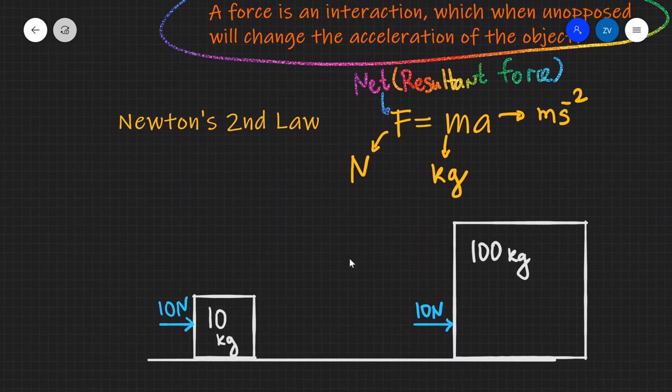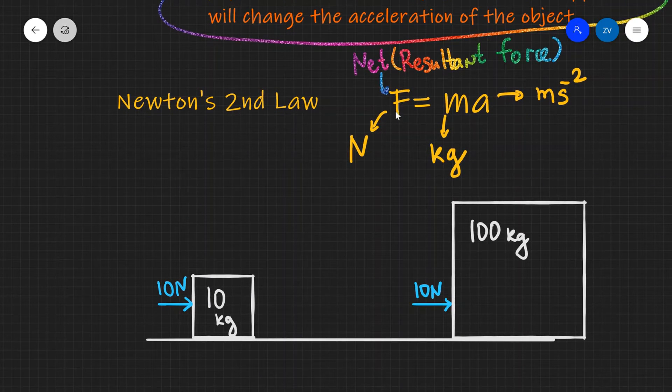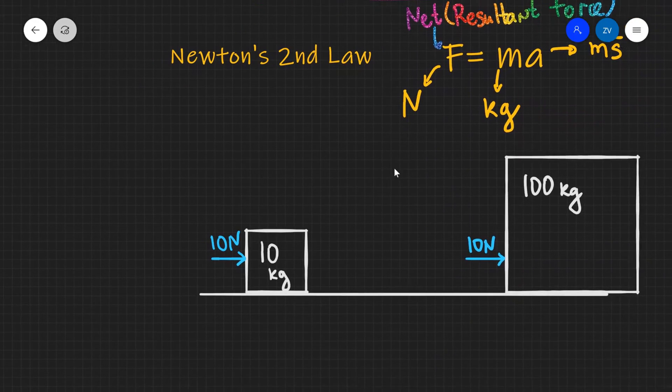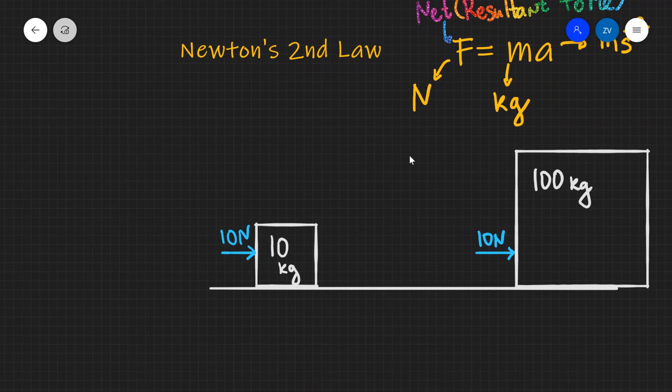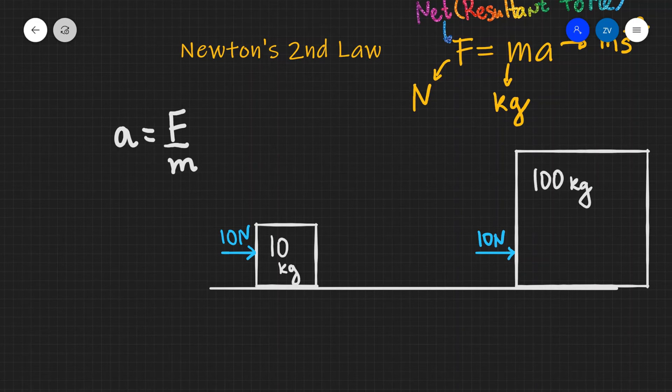Now this equation is telling us that the amount of force that must be acting on an object is proportional to the mass and also to the acceleration. It's also telling us that the acceleration of an object, so if we were to just rearrange that for a, the acceleration of an object is going to equal the net force acting on it divided by the mass.